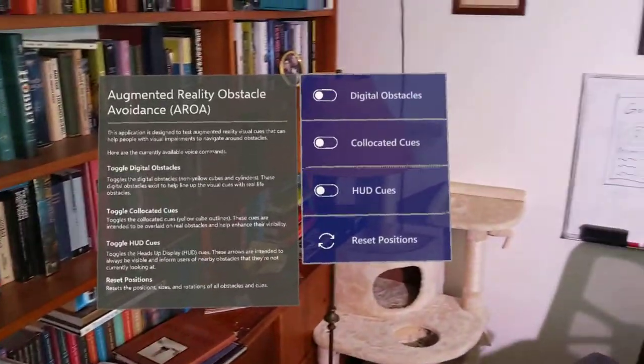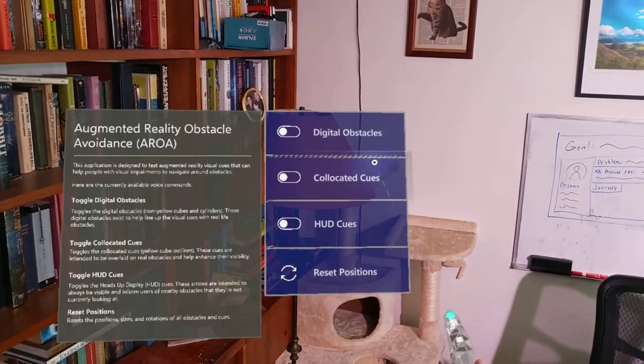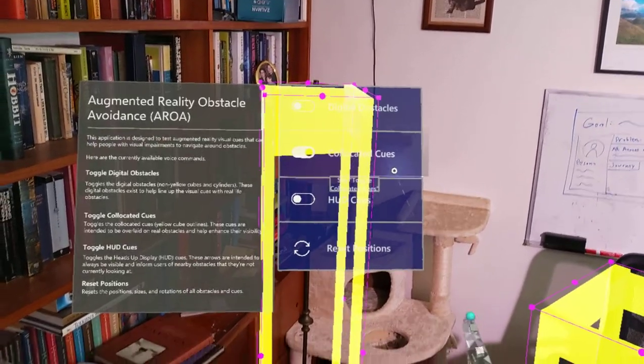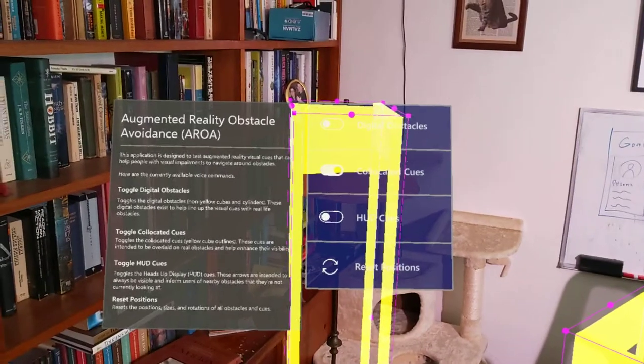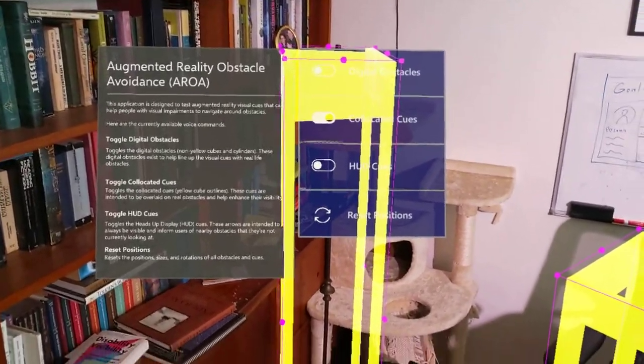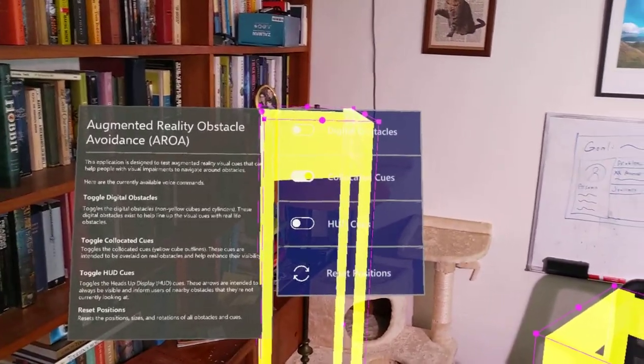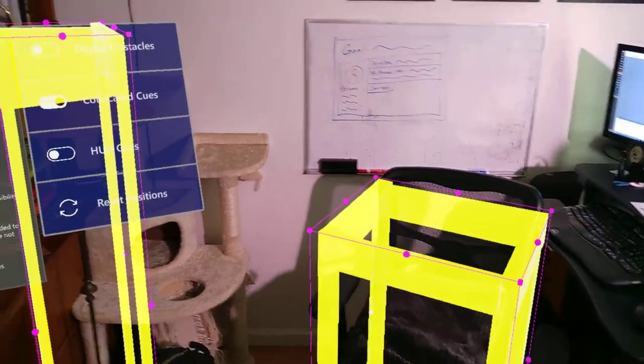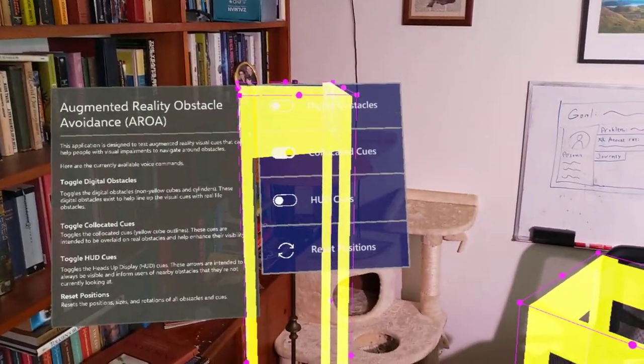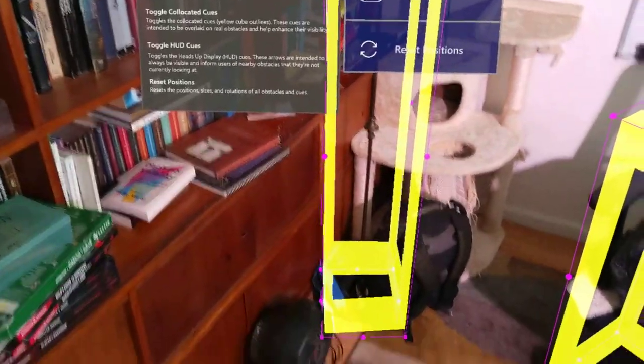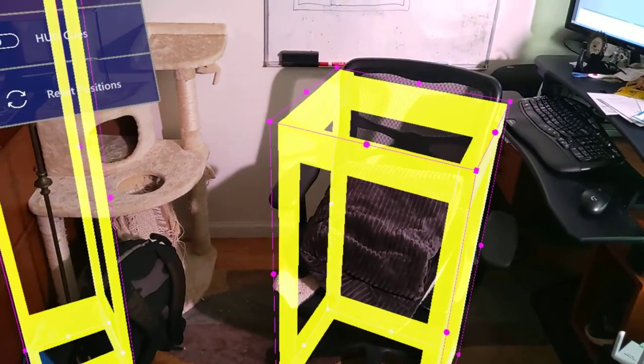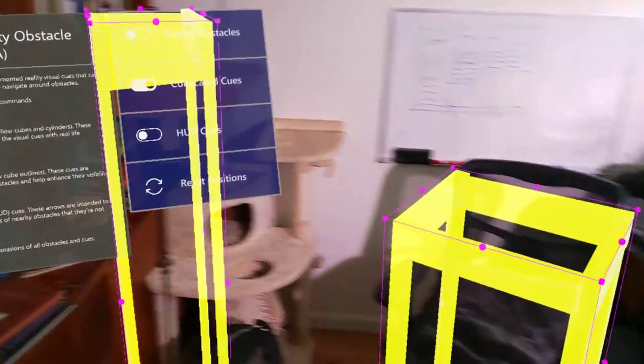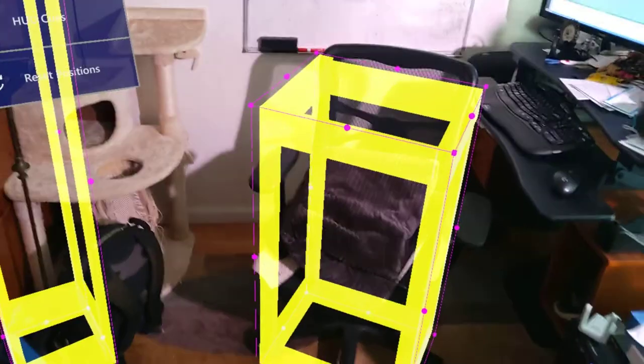First is co-located cues. These are going to be these yellow kind of cube wireframes, and these are designed to be highly visible. If you are blind and, say, this chair and this lamp were the same color as the background, it might not be easy to make out. These bright yellow co-located cues are co-located with the obstacle and will really just highlight them and help them stand out.